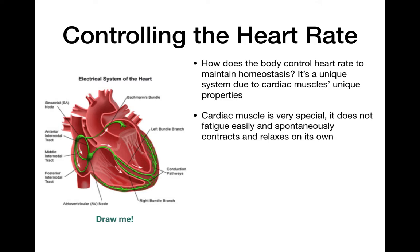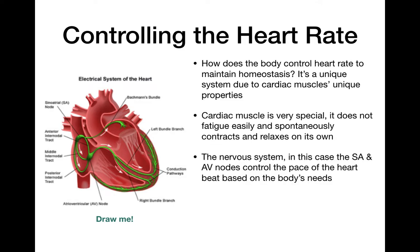The heart contracts and relaxes on its own — your heart will beat on its own without your nervous system telling it what to do. But you need the nervous system to tell your heart how often it should be beating. The nervous system controls the pace of the heartbeat based on the body's needs: if you need a lot more oxygen, it's going to beat faster; if you're sleeping, it'll beat slower.